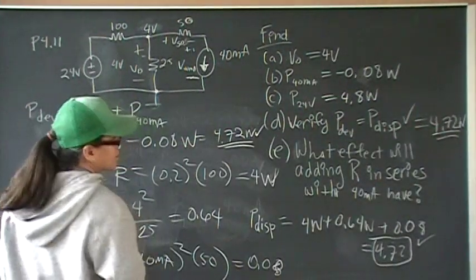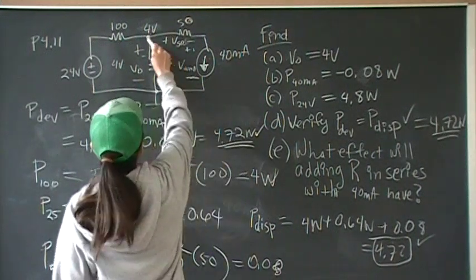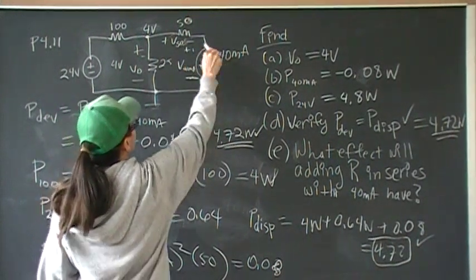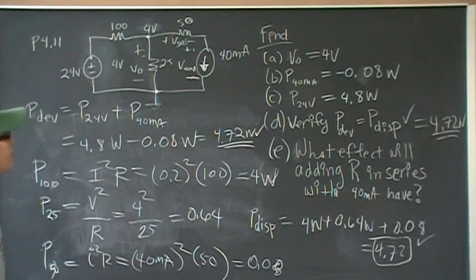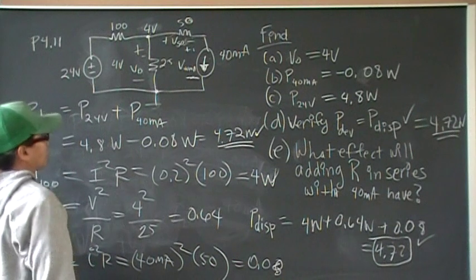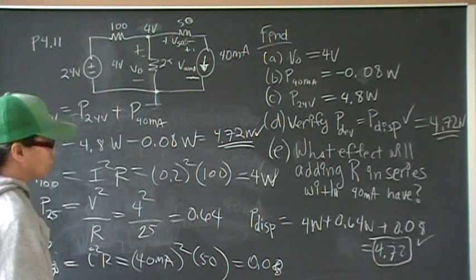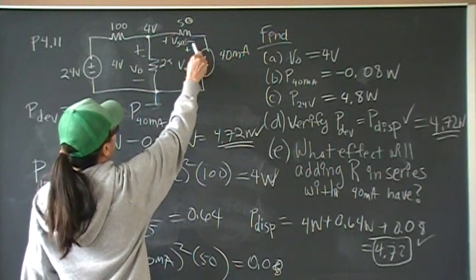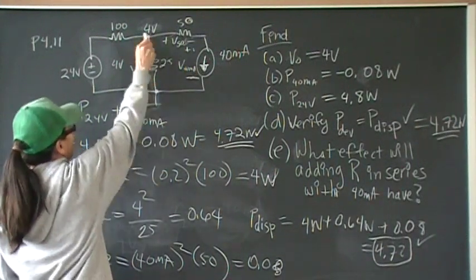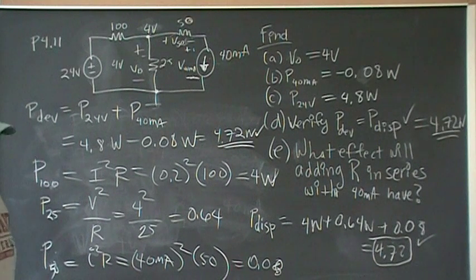Okay, for part E, they want to know what effect on V0 would it have to change the value of the resistor connected in series with the 40 milliamp current source, and the answer will be nothing, there won't be any effect because these are connected in parallel. Therefore, we know that any parallel connected branches have to have the same voltage, so we know that the only thing that will change is the voltage drop, the value of voltage drop across each of the elements, so the sum of the voltage drop has to equal V0. So adding a different value or changing the value of that resistor will not have an effect on V0, and that's the answer.